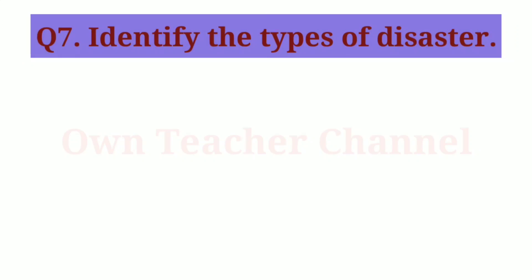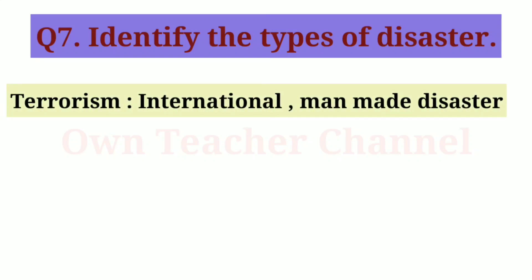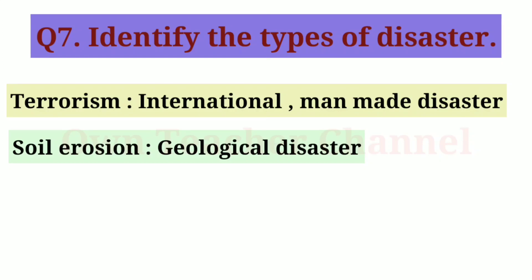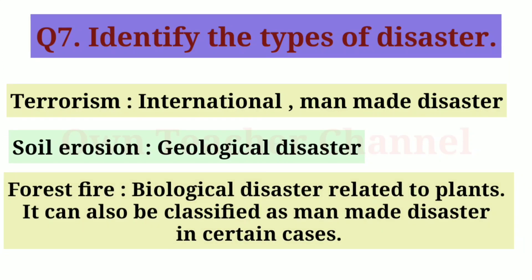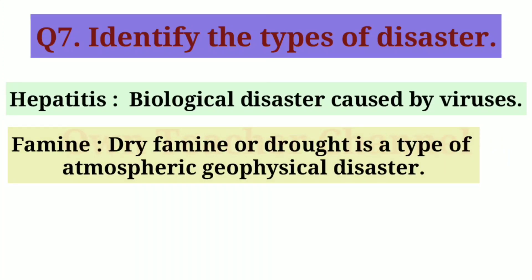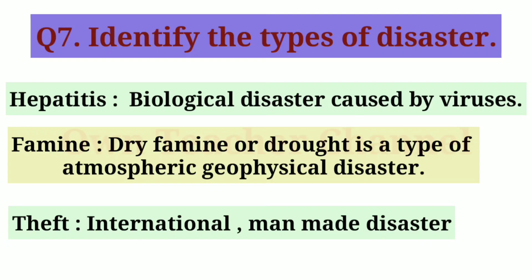Question 7: Identify the types of disaster. Terrorism — international man-made disaster. Soil erosion — geological disaster. Forest fire — biological disaster related to plants; it can also be classified as a man-made disaster in certain cases. Hepatitis — biological disaster caused by viruses. Famine or drought — a type of atmospheric geophysical disaster. Theft — international man-made disaster.